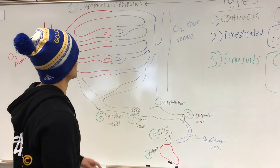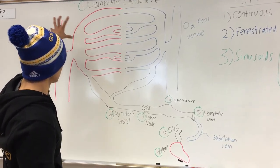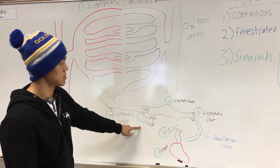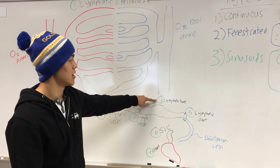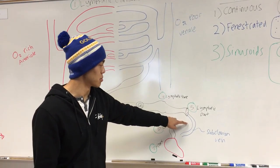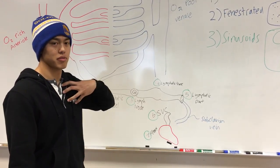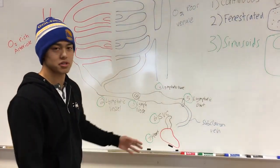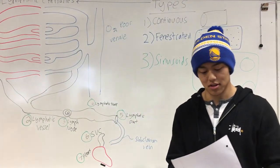Here's the circulation pathway. It starts at the lymphatic capillaries, goes down to the lymphatic vessels, which then go to the lymph nodes, then the lymphatic trunk, and then the lymphatic duct. Or it will empty through the subclavian vein, which leads to the superior vena cava above the heart, and all the nutrients go back to the heart and circulation continues. That is the circulation pathway for the leaked nutrients.